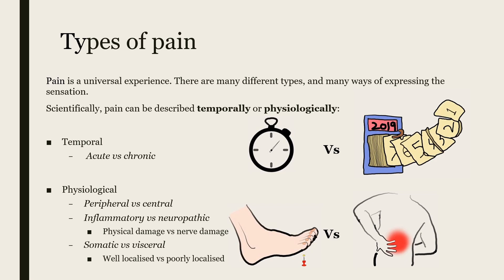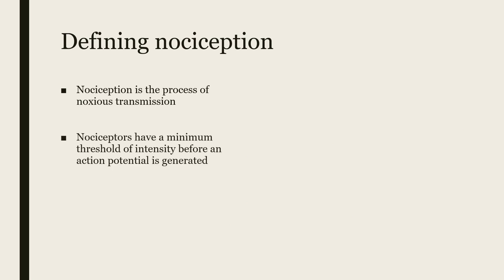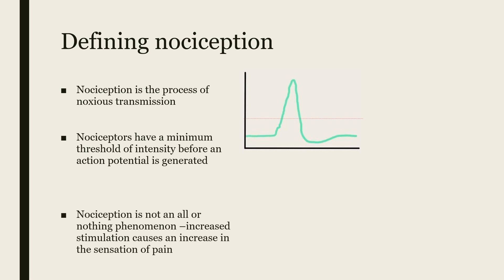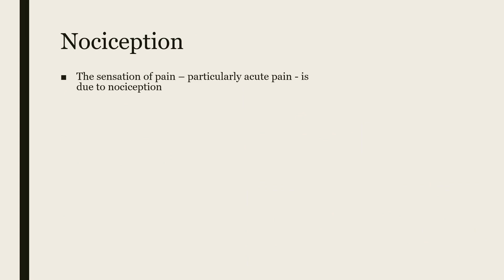The sensation of pain, and particularly acute somatic pain, is due to nociception. Nociception is defined as the process of noxious transmission. Nociceptors have a minimum threshold of stimulation that must be reached before an action potential is generated. However, nociception is not an all-or-nothing phenomenon. Increased and more frequent stimulation causes greater nociception, thus greater pain sensation, compared to less frequent stimulation, as you can see in the graphs before you. The red line on the graphs denotes the minimum point of stimulation required to generate an action potential.